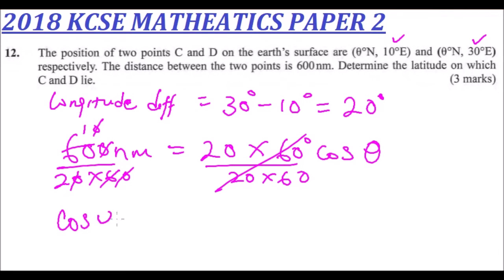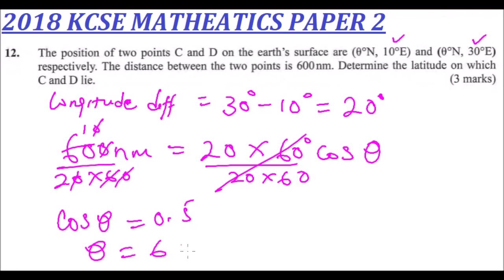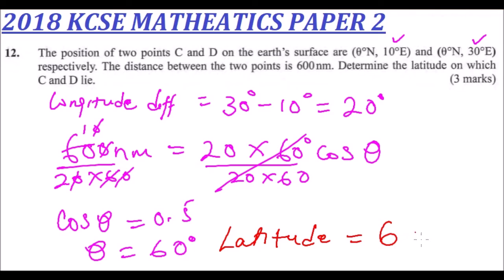So cos theta is equal to 0.5. If we know the cosine of theta is 0.5, then theta is equal to 60 degrees. Therefore, the latitude is equal to 60 degrees to the north. That's how we work out that question.